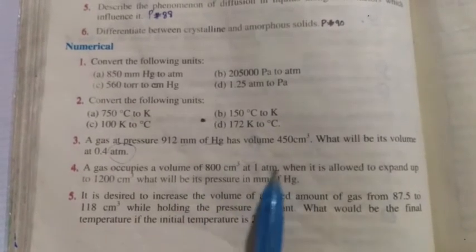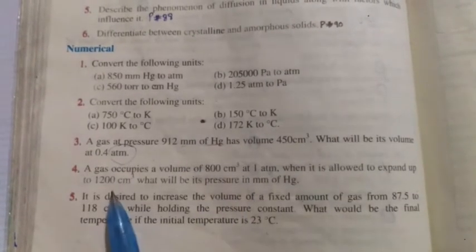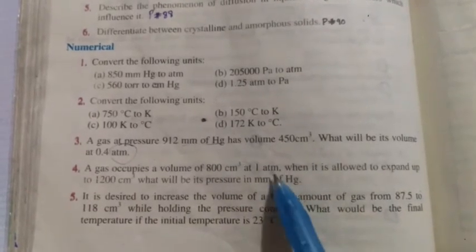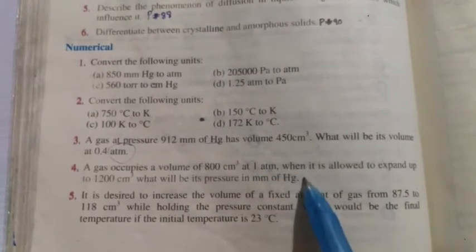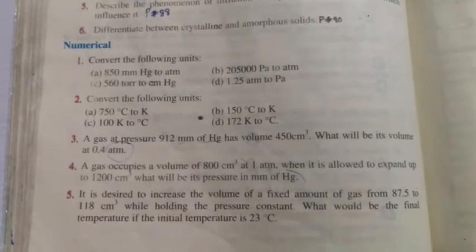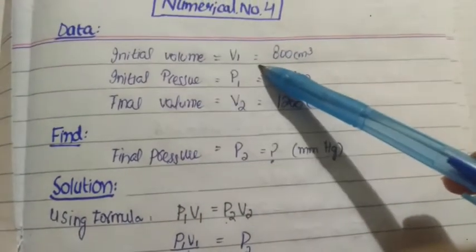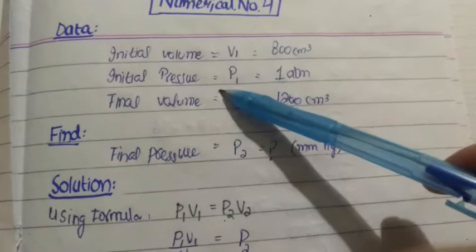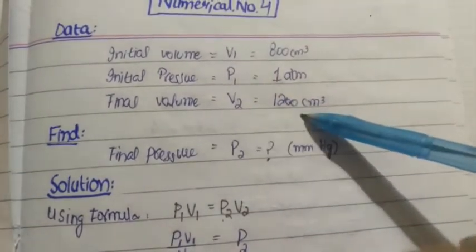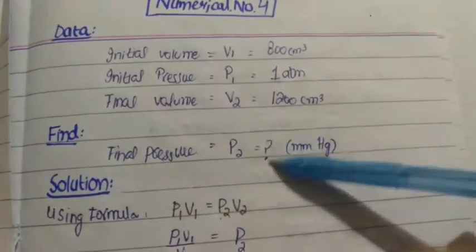What will be its pressure in mm of Hg? We need to find the pressure in mm Hg. Initial volume and initial pressure are given, final volume is given, and we need to find final pressure. But here the initial pressure unit is in atm, and final pressure unit we need to find in mm of mercury. So first of all, we will write the data.